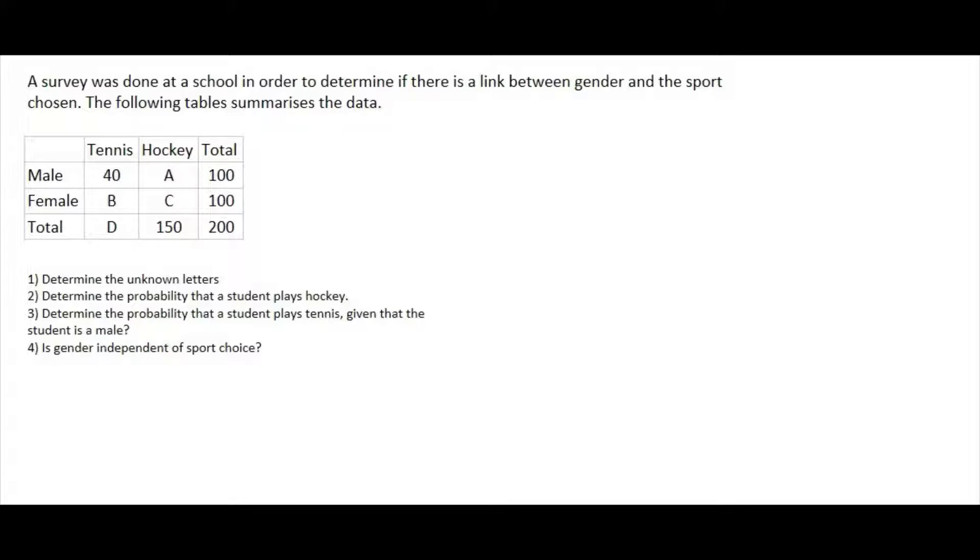In grade 11, we also have to know how to work with these contingency tables. They're fairly easy, so let's have a look. In this one, we have a survey that was done at a school in order to determine if there is a link between gender and the sport chosen. The following table summarizes the data, so we've got male, female, and we've got tennis and hockey.